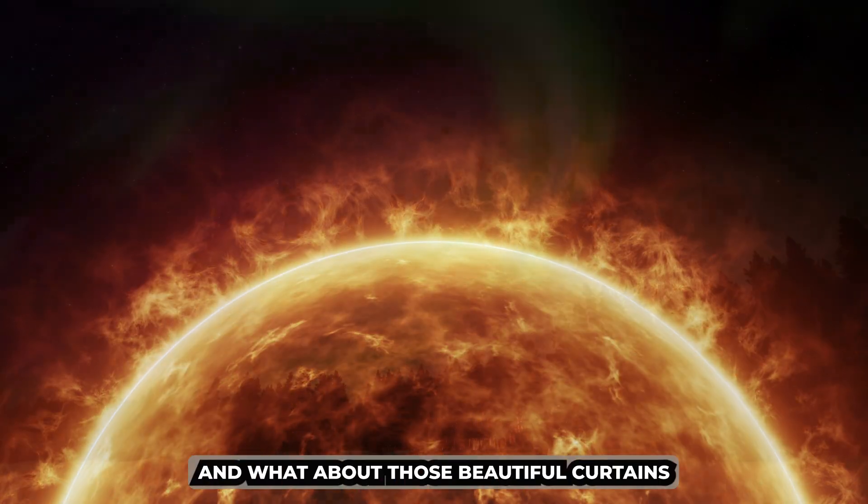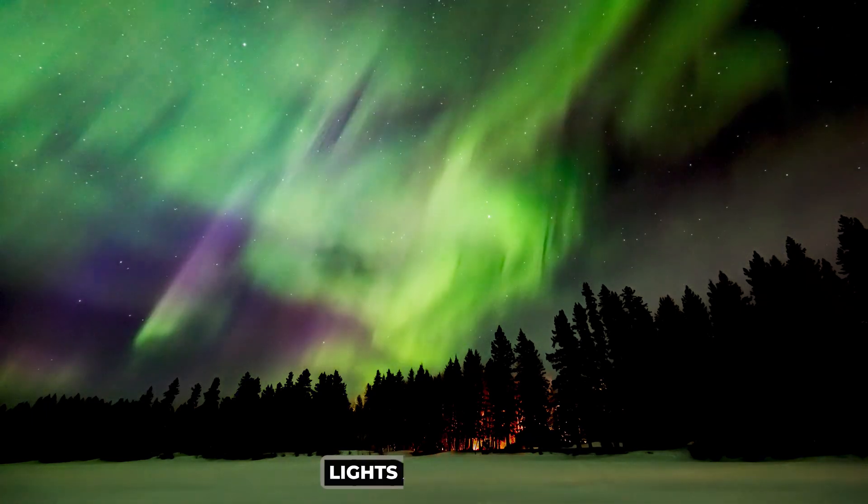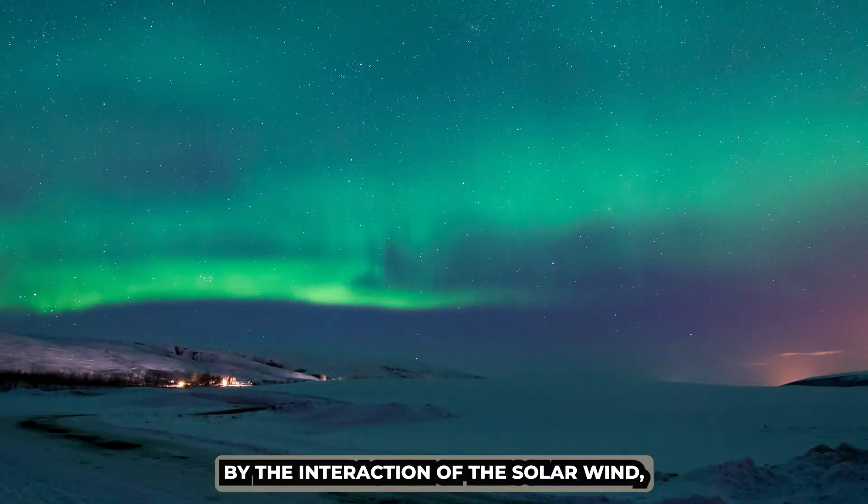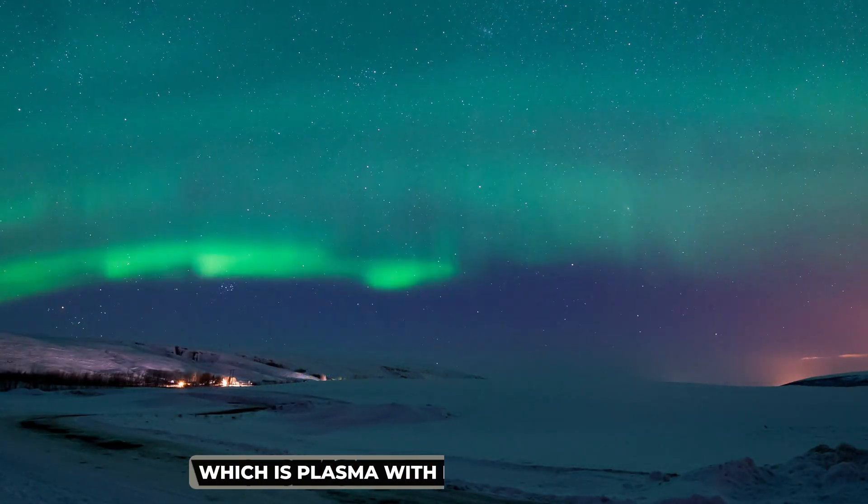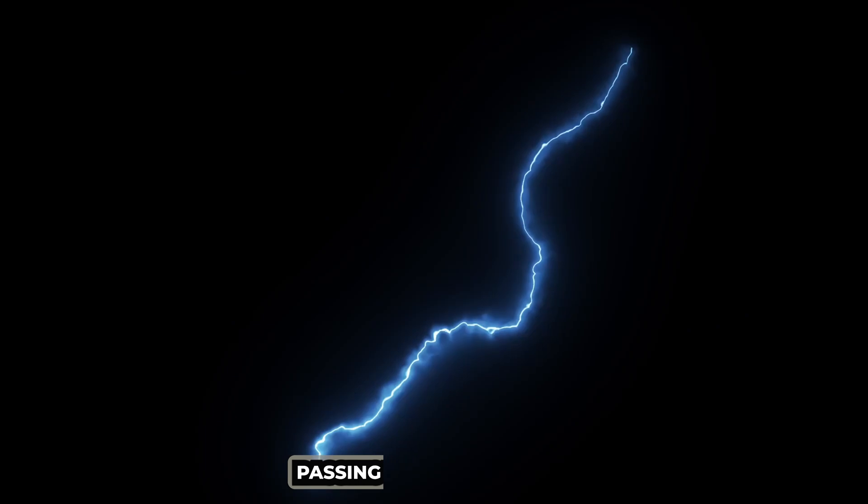Even our sun is a gigantic sphere of plasma undergoing constant nuclear fusion. And what about those beautiful curtains of light dancing at the poles? The northern and southern lights are created by the interaction of the solar wind, which is plasma, with Earth's atmosphere. Even lightning, those electrical discharges that amaze and frighten us, are channels of plasma passing through the air.